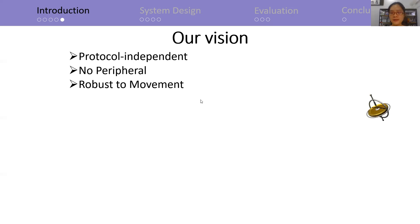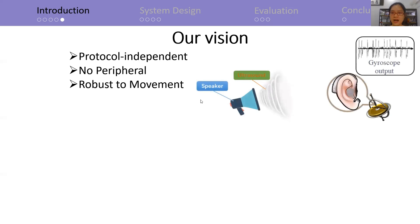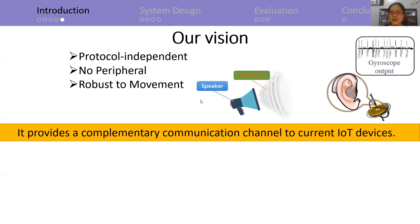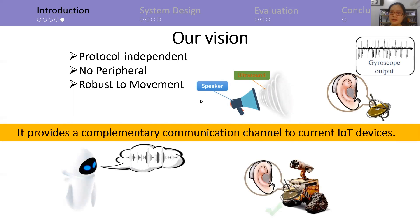We turn our attention to the gyroscope. Interestingly, we found that it will respond to external sound and produce low-frequency readings. With this observation, it is possible to build a complementary communication channel to current IoT devices. So by using such a system, we can enable Deaf-Aid for EVE to understand what WALL-E is saying.